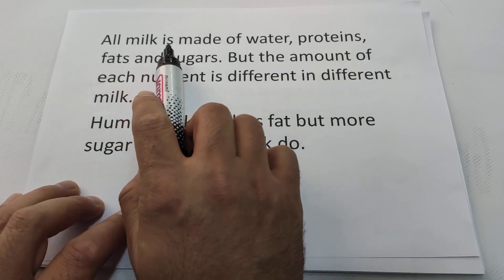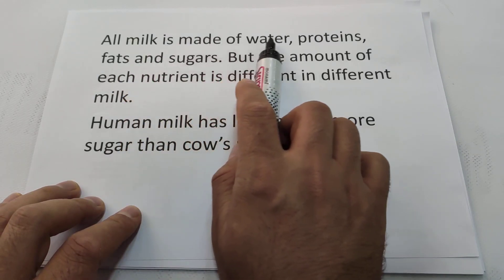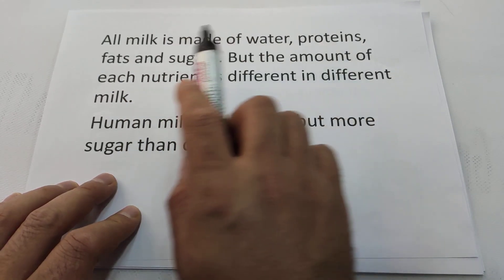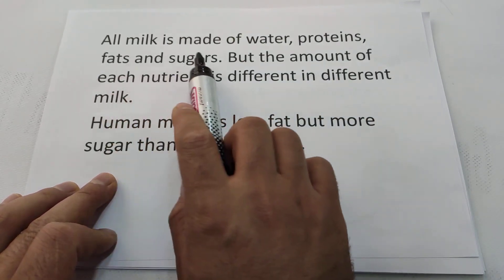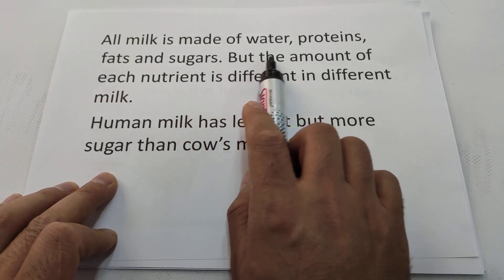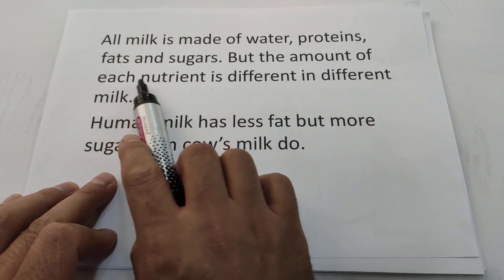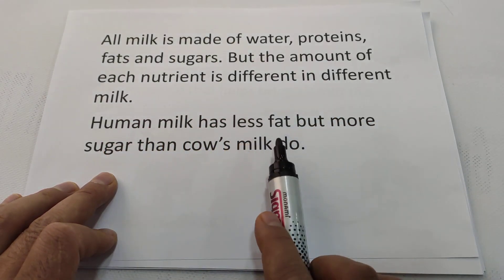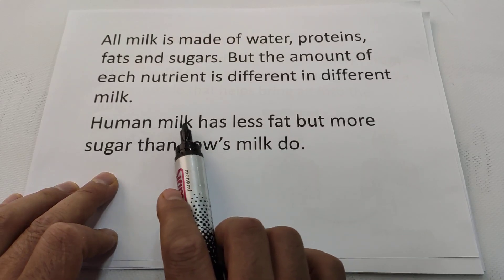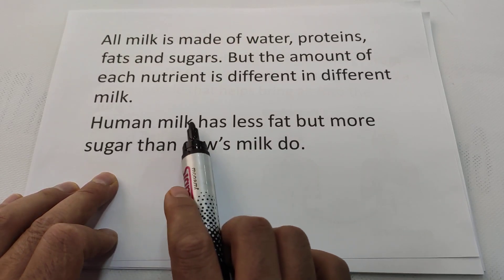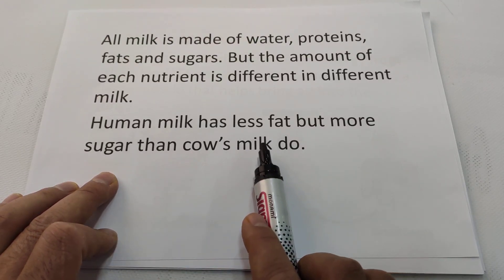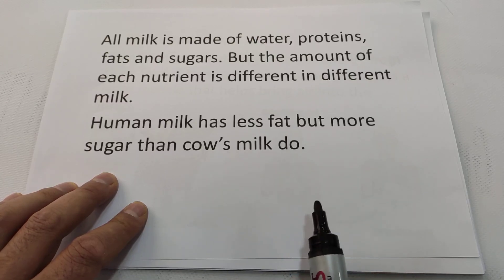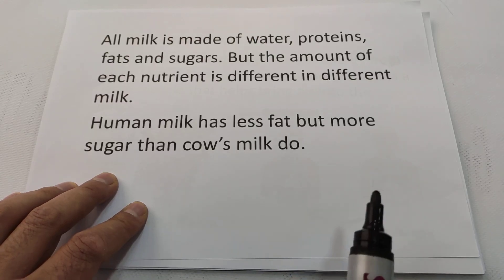All milk is made up of water, protein, fats, and sugars. But the amount of each nutrient is different in different milk. Human milk has less fat but more sugar than cow's milk.